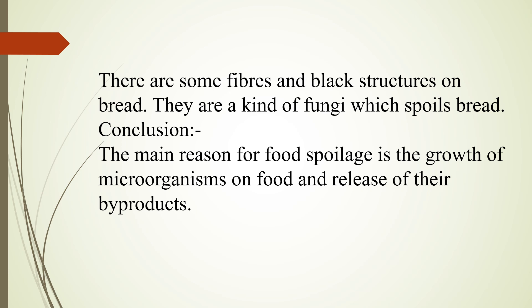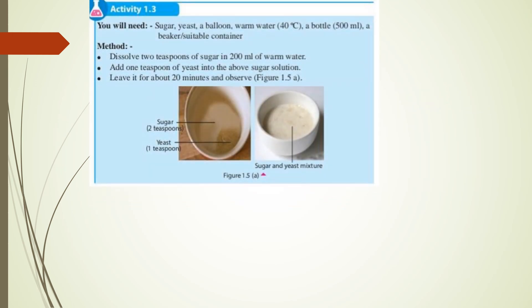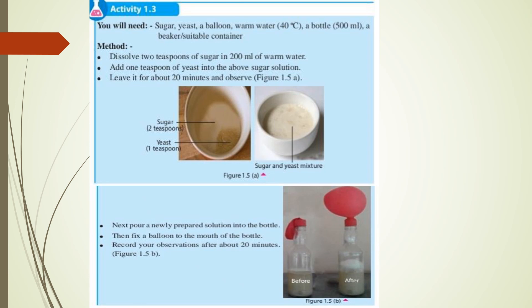Now we will do another activity to study microbial activity. In this activity, you will need sugar, yeast, a balloon, warm water at about 40°C, a 500 ml bottle, and a beaker or suitable container. The method is: dissolve 2 teaspoons of sugar in 200 ml of warm water, then add 1 teaspoon of yeast into the sugar solution. Mix the sugar and yeast, leave it for about 20 minutes and observe. Then pour the newly prepared solution into the bottle and fix a balloon to the mouth of the bottle. Record your observation after about 20 minutes.